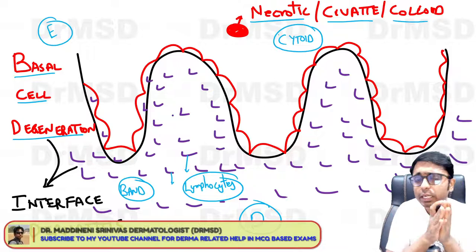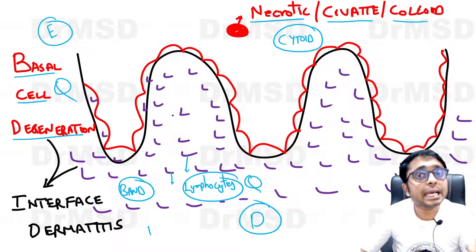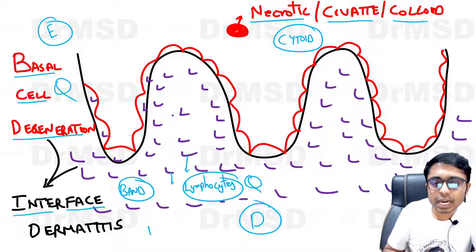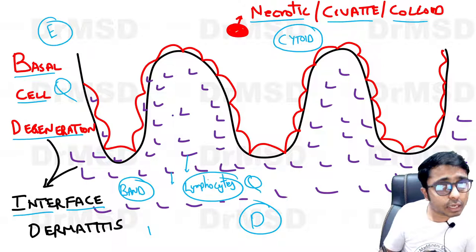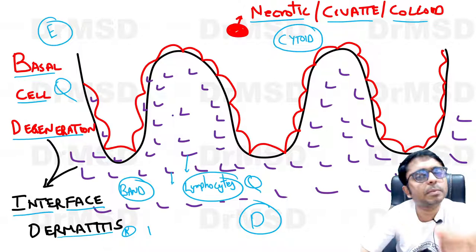Basal cell vacuolation and lymphocytic infiltration — both of these together are called interface dermatitis. Interface refers to the dermoepidermal junction where these changes occur. Interface dermatitis is a very important concept, and one classic example is lichen planus, though there are others which will be covered in upcoming videos.